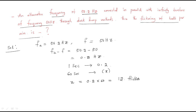So 0.2 Hz means for one second we have a flickering rate of 0.2. For 60 seconds: x equals 0.2 into 60, which gives 12. So 12 flickerings per minute — meaning the light will be on and off 12 times per minute.